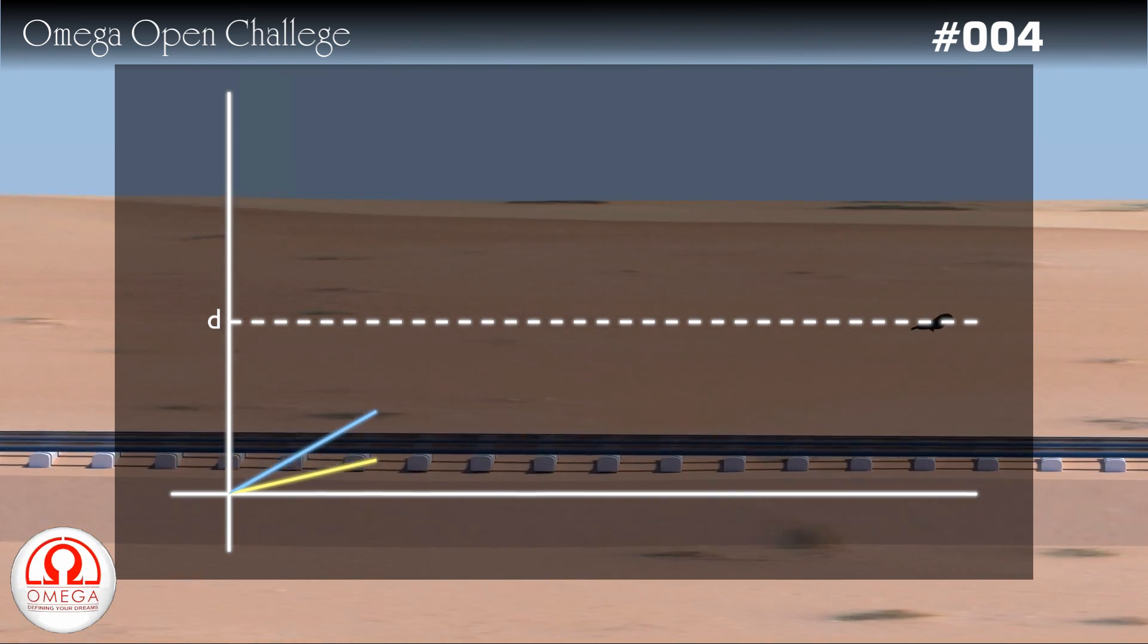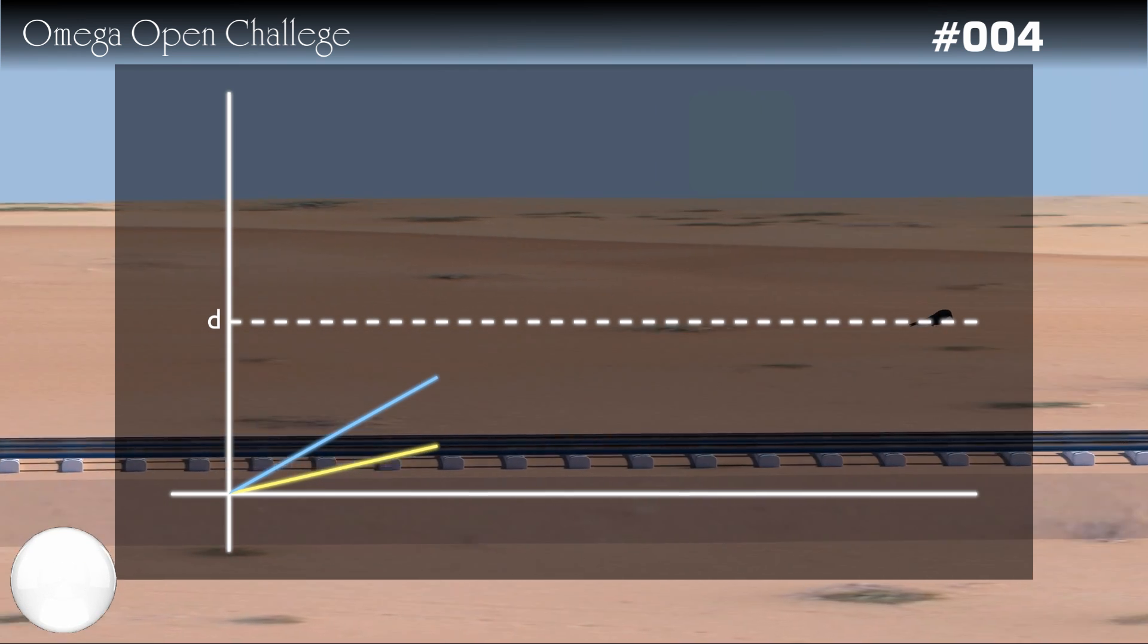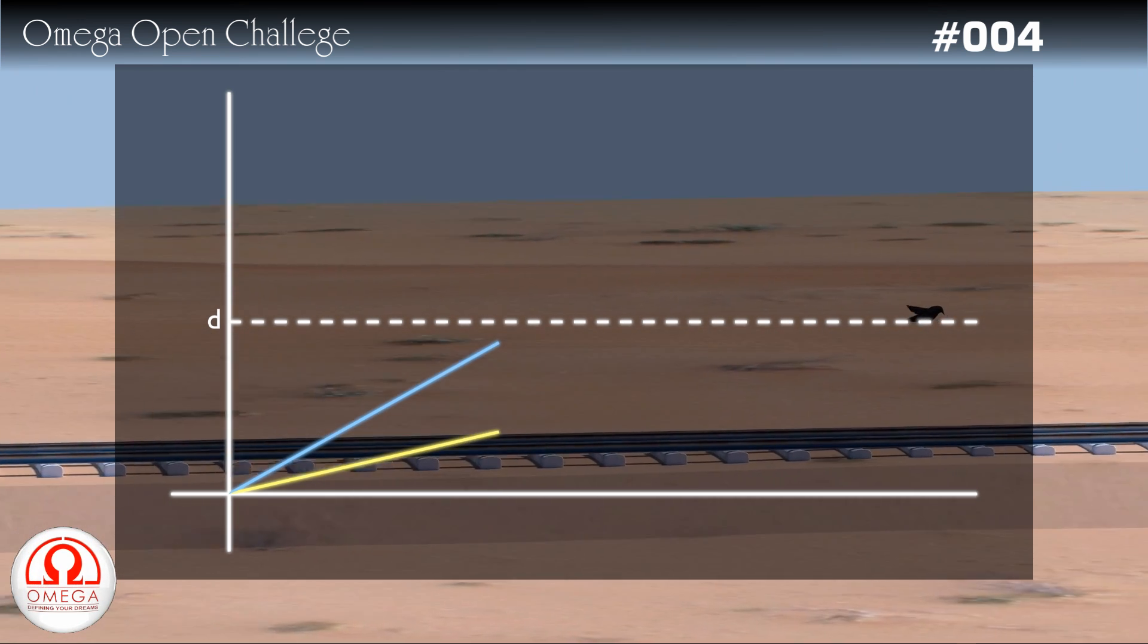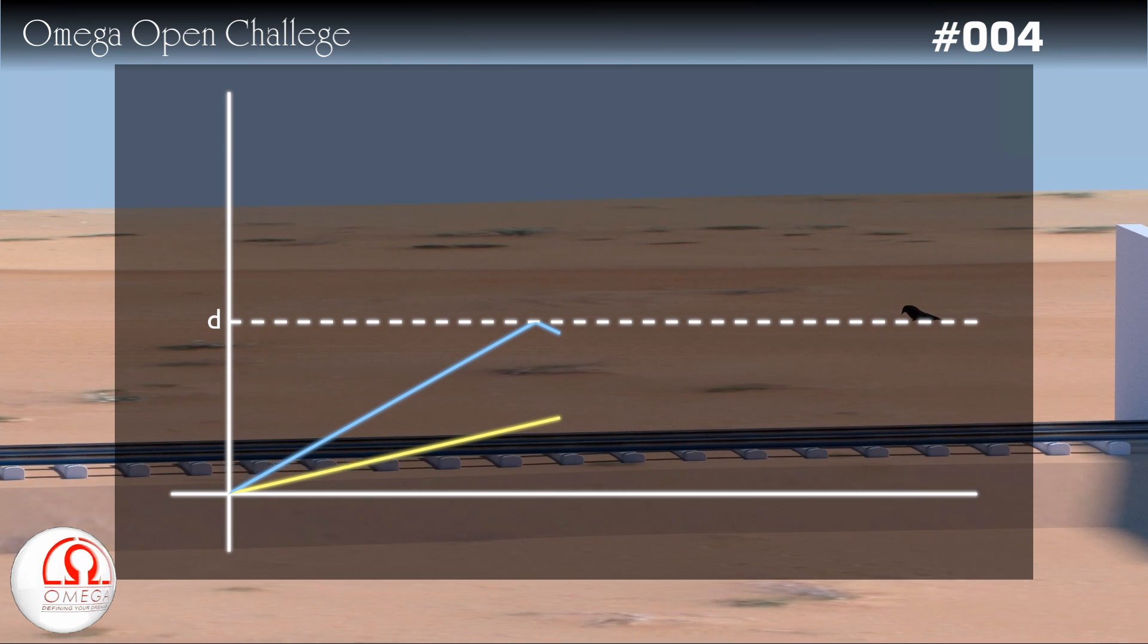But for the bird, the direction of velocity changes when it reaches the wall. So the graph will reach up to the mark with the slope equal to v and then it will turn back.